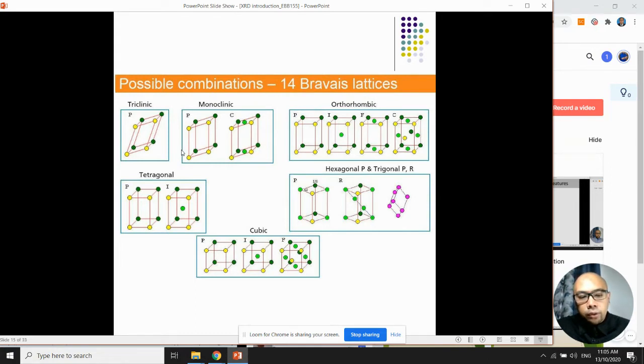For students in first year, you will learn this in EBB 113 later on: what is triclinic, monoclinic, orthorhombic, tetragonal, hexagonal, and cubic shapes of crystals. They have methods to calculate and determine which group a crystalline material belongs to, whether tetragonal or monoclinic, for example.